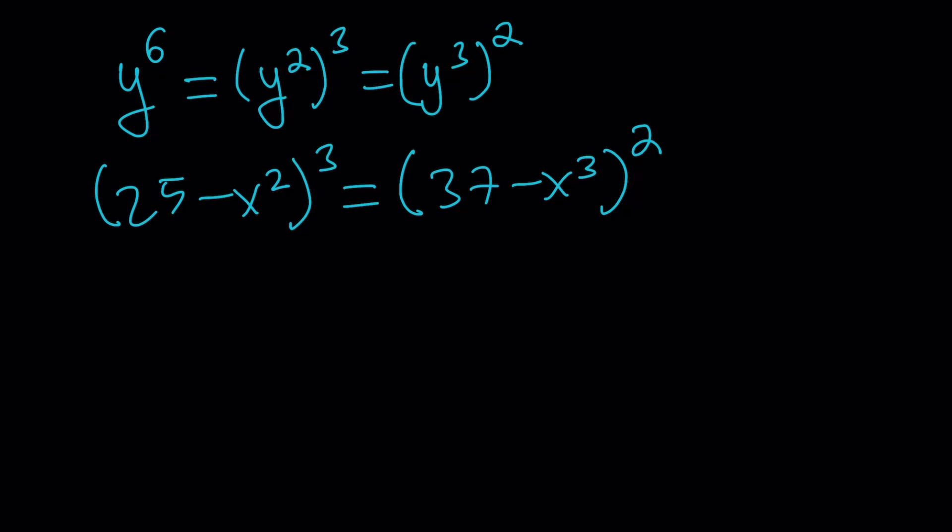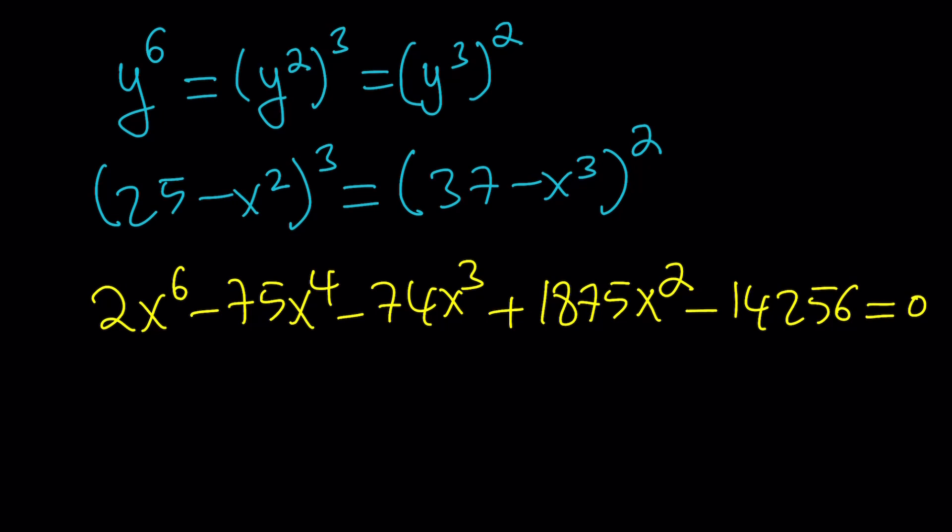Now, we're going to expand this, right? I'll do it for you. When you do, you're going to get a hexic equation. This is what it's going to look like: 2x to the 6th minus 75x to the 4th minus 74x cubed plus 1,875x squared minus 14,256. This is pretty hexic, right? I mean, should I say hectic?